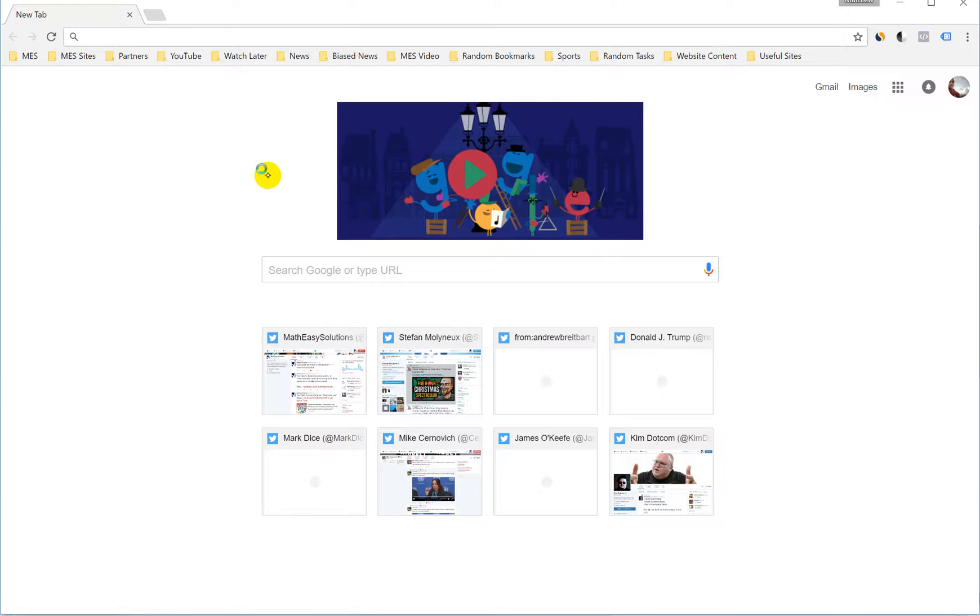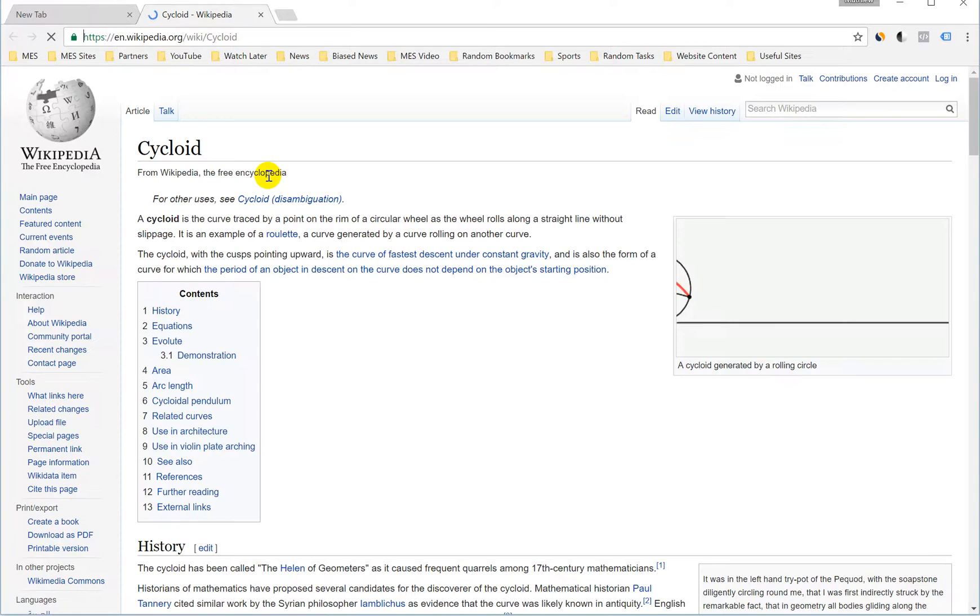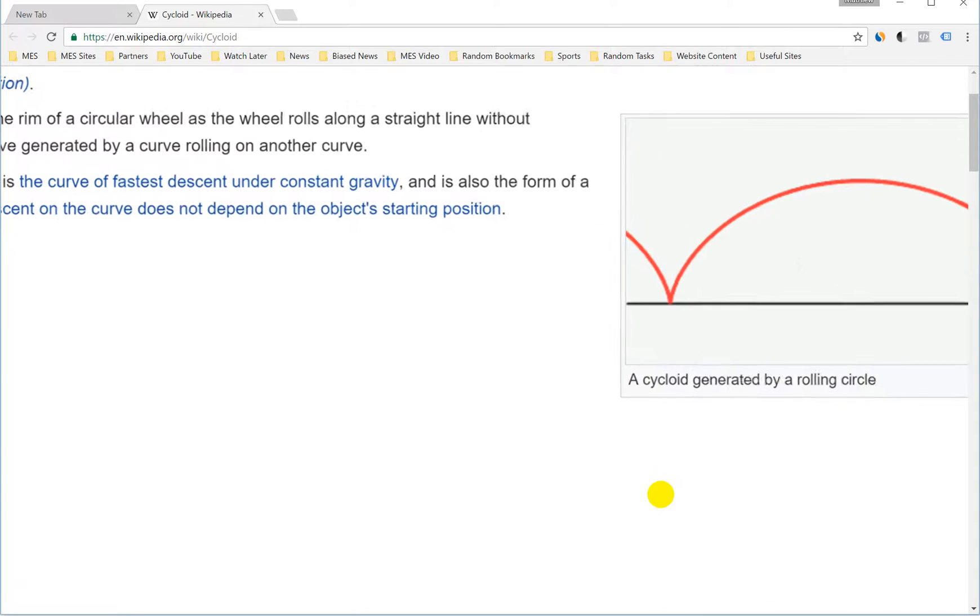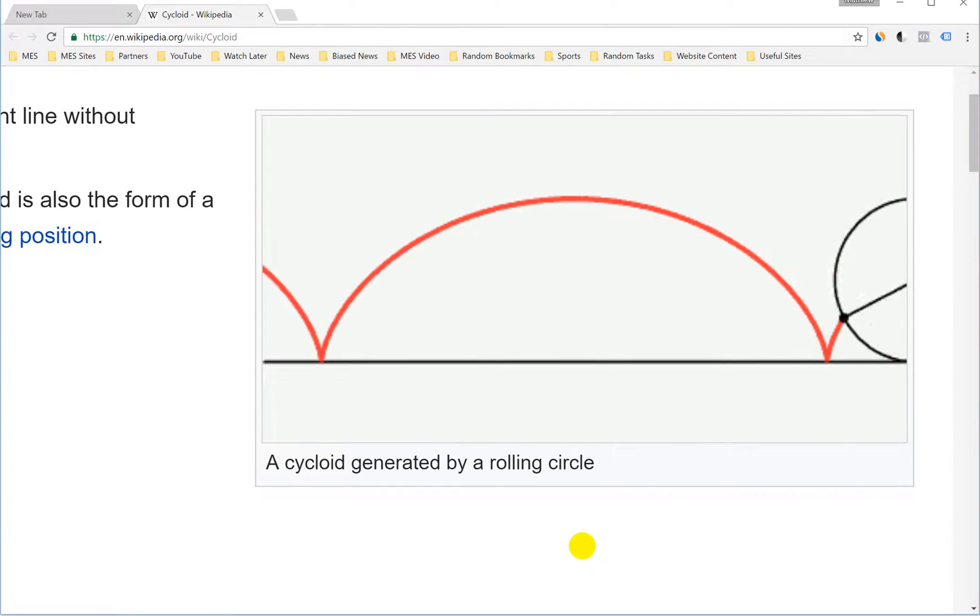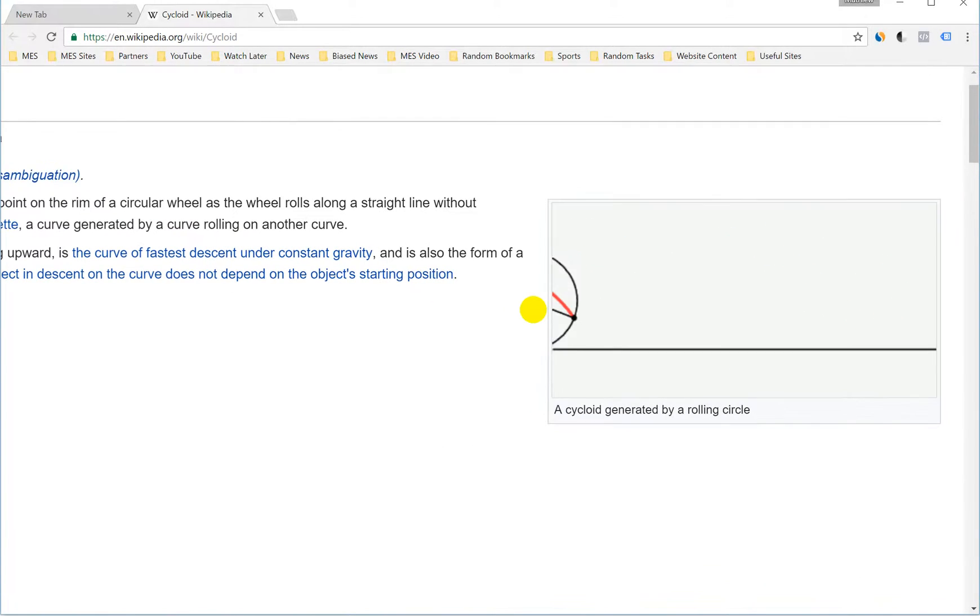So just to show you the example on it, here's a click on the Wikipedia page, it has a cool gif right here. Move it in the center, let's get it bigger. Yeah, so as you can see, the red curve is a cycloid and it's formed by rotating that circular wheel or circle like that, which is pretty cool right there.